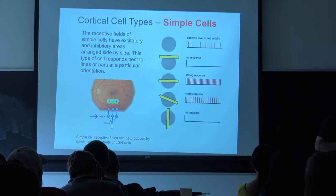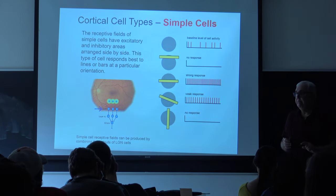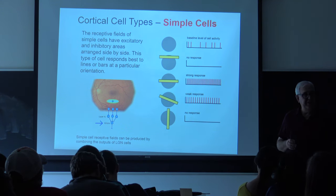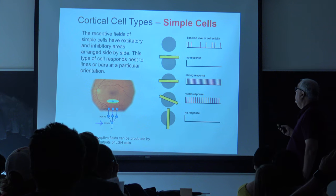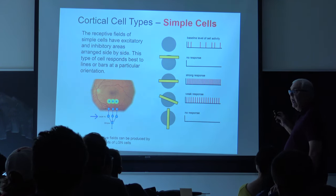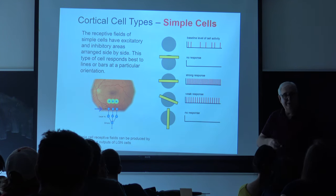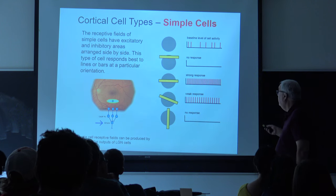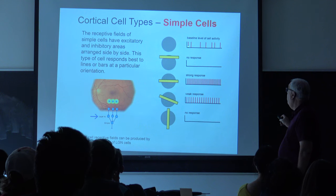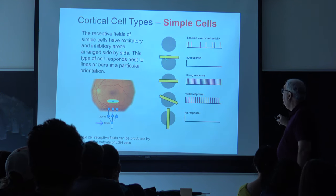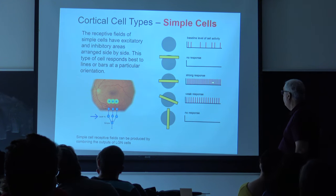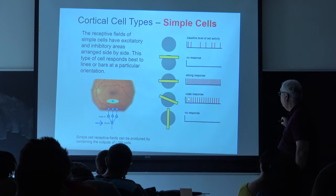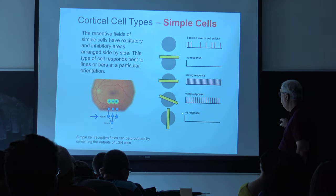You can break down the cells in the primary visual cortex into three basic types. There's what's called a simple cell. With no stimulation, the cell fires at its background rate. A line at the edge of the receptive field produces no response. A bar in the center of the receptive field gives the maximum response. As you vary the orientation, the response gets weaker, and if it's in the orthogonal direction you get no response at all.